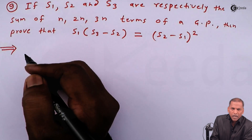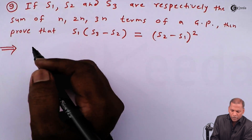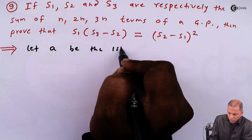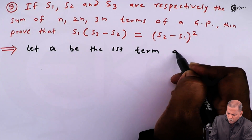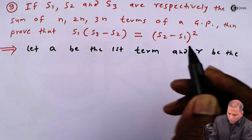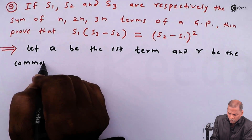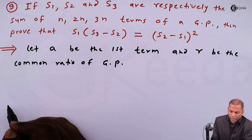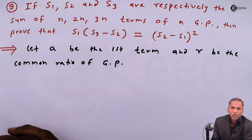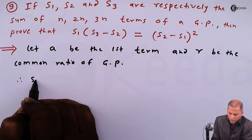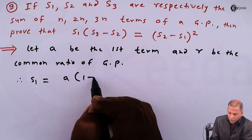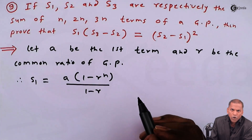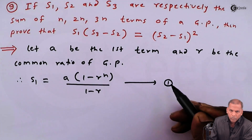The solution is very simple. First of all, we consider: let a and r be the first term and common ratio of a GP. Since S₁ represents the sum of first n terms of a GP, therefore S₁ is equal to a times (1 - rⁿ) divided by (1 - r). Let us denote this as equation 1.